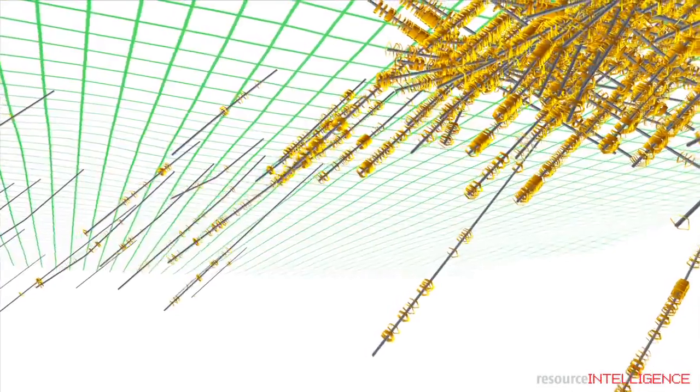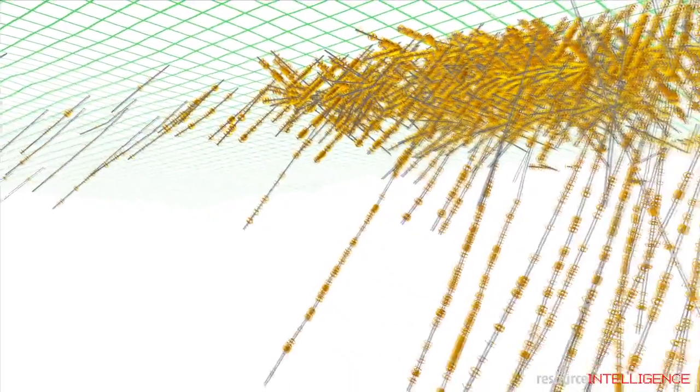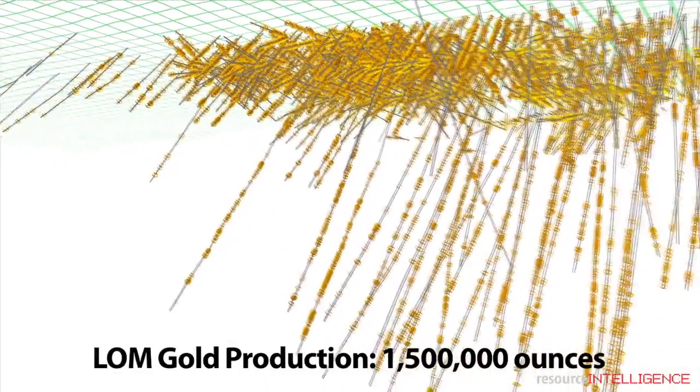Gold production is estimated to be 166,000 ounces per year over nine years, producing a total of 1.5 million ounces of gold.